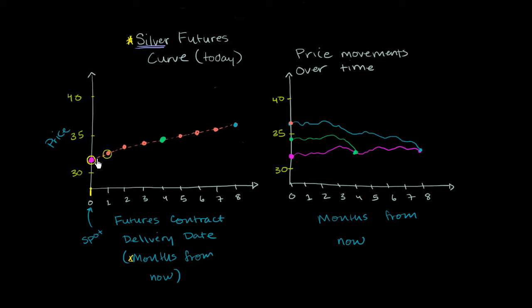So I want to make it very clear. This is not showing you how the spot price of silver will move over the next eight months. It's telling you today, if you wanted to transact in silver right now, you would transact at $32 an ounce.